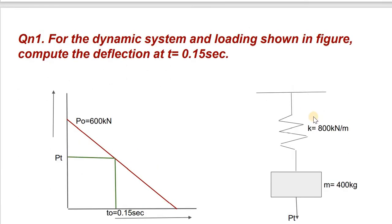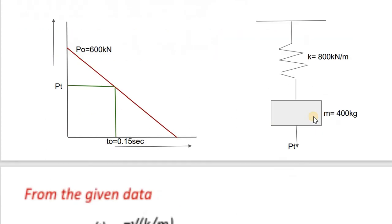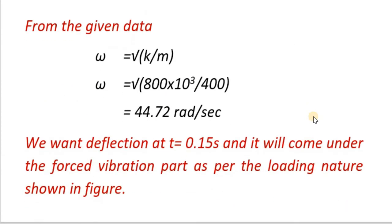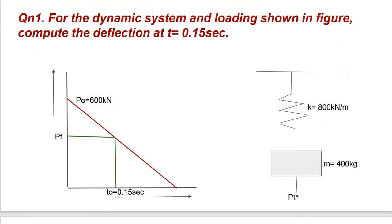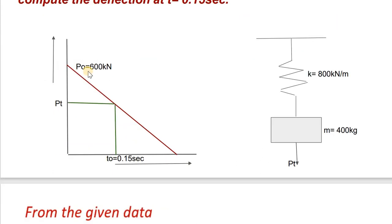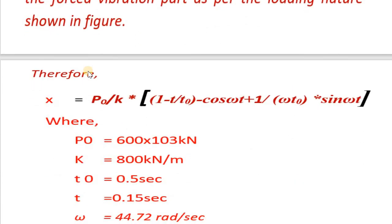Now let us look at a problem: for a dynamic loading system shown in the figure, compute the deflection at t equals 0.15 seconds. The load is triangular in form. Since t equals 0.15 is less than t0 equals 0.5 seconds, it falls under phase 1, which is forced vibration. In numerical problems, conditions in phase 1 are mostly asked since phase 2 equations are very large.